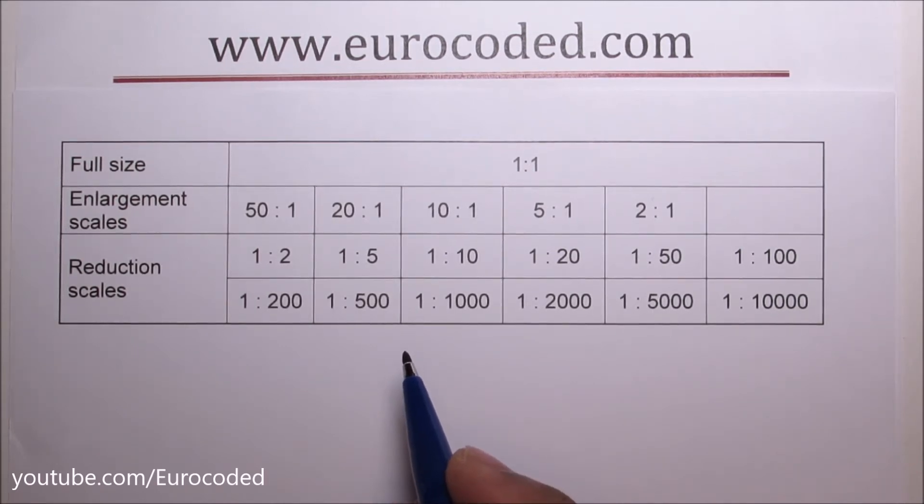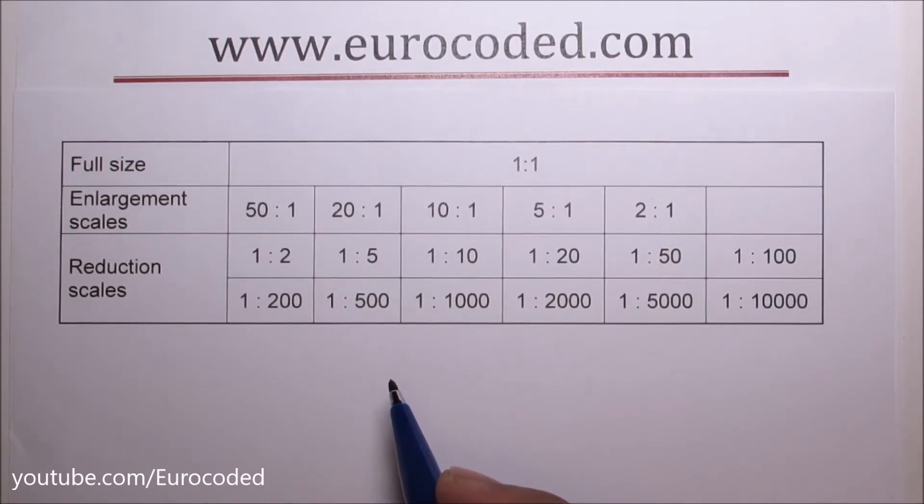Scale is the ratio of linear dimension of an element represented in the drawing to the real linear dimension of the same element itself. That sounds confusing, however when you see the examples you will understand what it means.